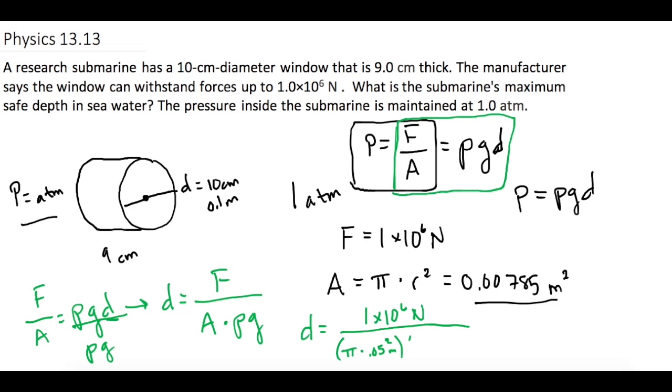If we times that, now we'll get a more accurate answer. So we times that by 9.8 for gravity, and rho for seawater is 1030 kilograms per cubic meter. When we plug all that in, the maximum safe depth that that submarine can go with that window is 12,614 meters, or 1.3 times 10 to the 4 meters.